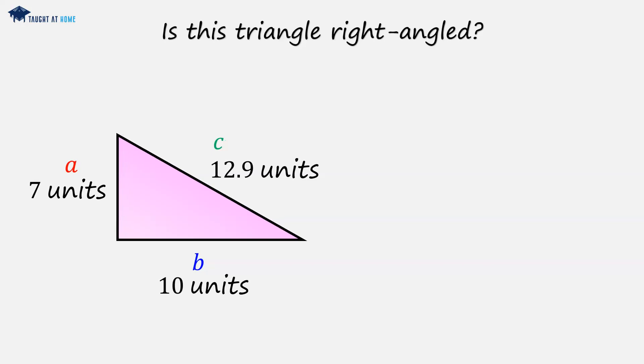So to determine whether it is right angled, we're going to ask the question, does c squared equal a squared plus b squared? And if it does, then it is right angled, and if it doesn't, then it is not right angled.